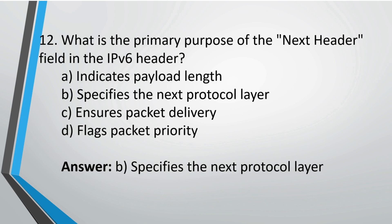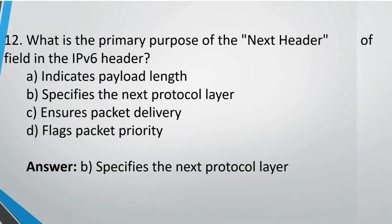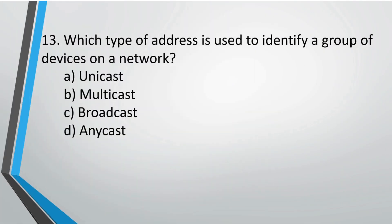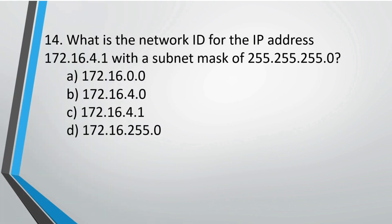Question 12: Which type of address is used to identify a group of devices on a network? The correct answer is option B, multicast.